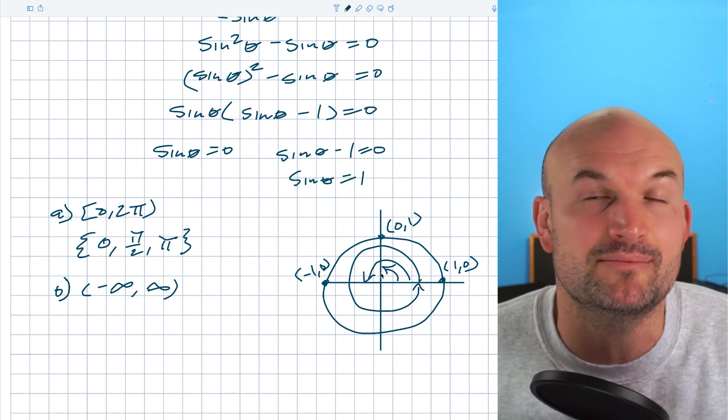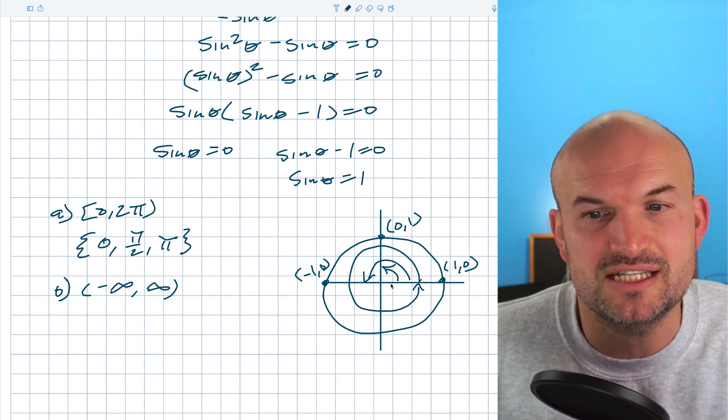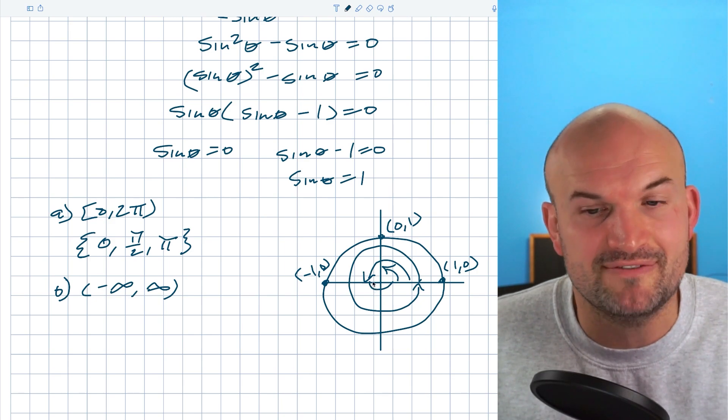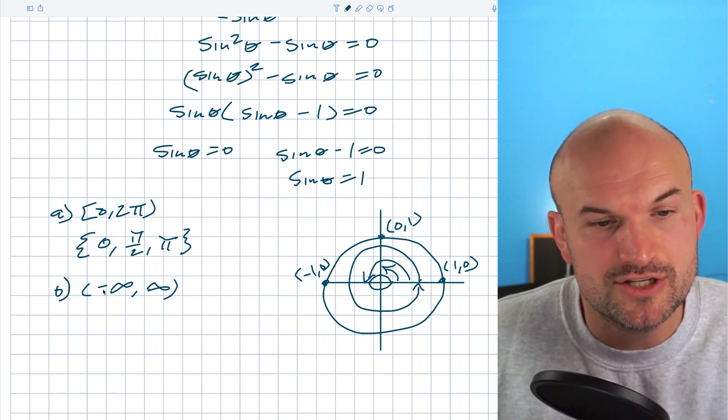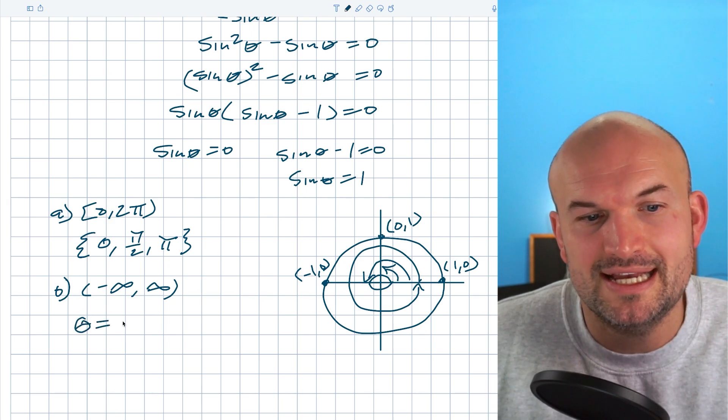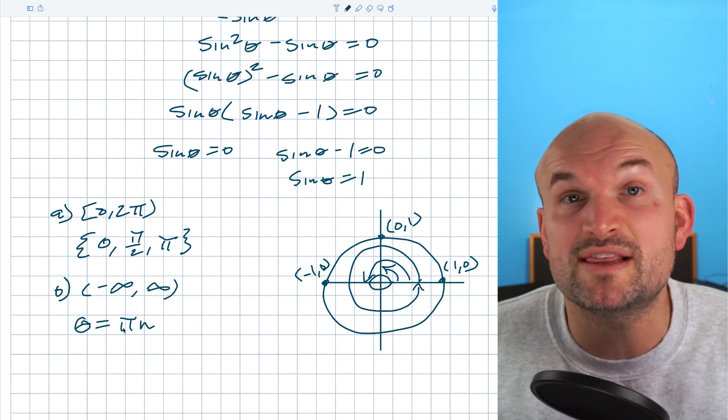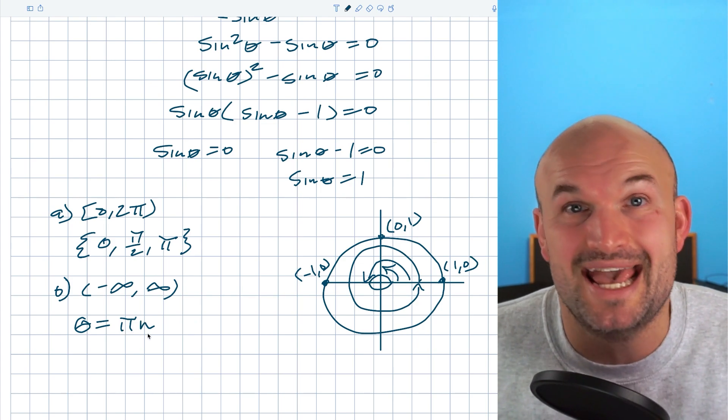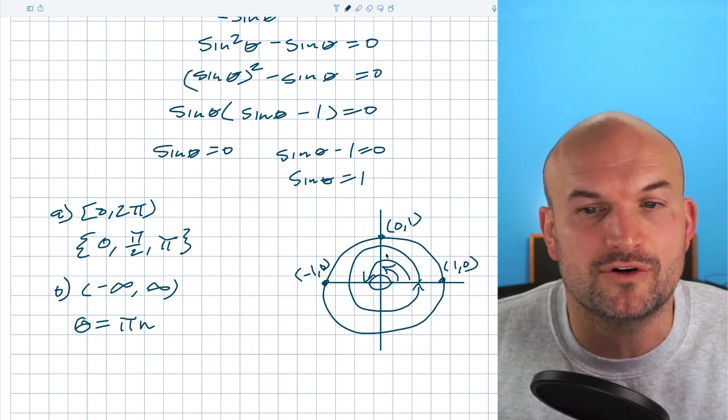Writing two pi n is not going to be the most efficient way to write all of our solutions. What I want you to recognize is the distance between zero and pi is just pi, and if I keep adding or subtracting pi I'm going to keep bouncing between these two solutions. So therefore I can effectively just write theta equals pi n, which is going to satisfy both of these solutions with one equation because n represents any integer.